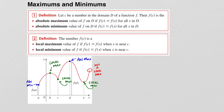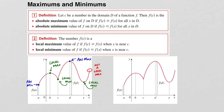Now, what we need to do is find out how to find these maximums and minimums. Looking at that graph, at the absolute maximum, the local maximum, and the local minimum, all of those points have something in common: the slope of the tangent line is equal to zero at all those points. So f prime of d is zero, f prime of e is zero, and f prime of b is zero.